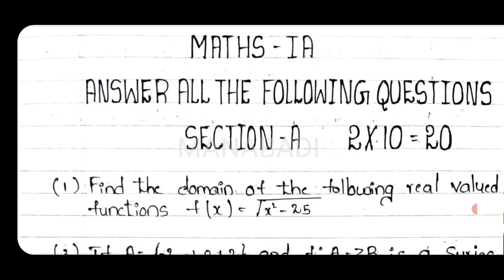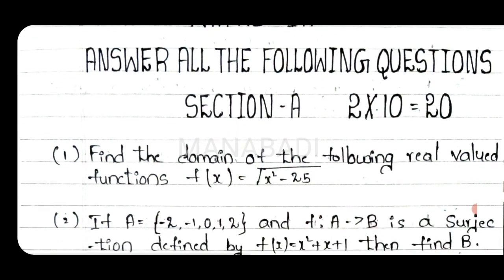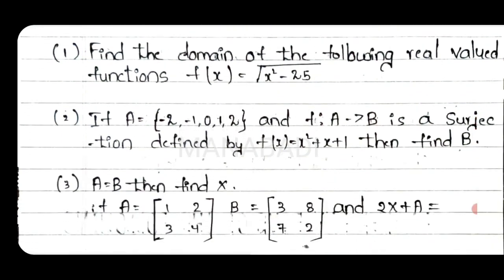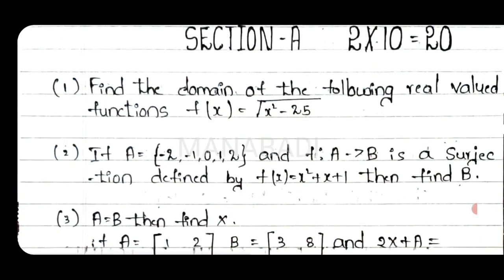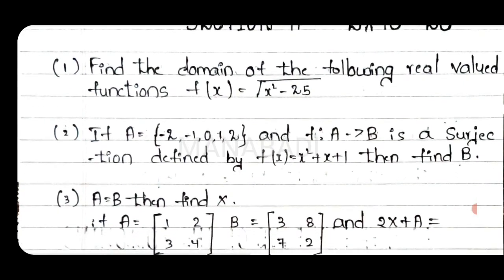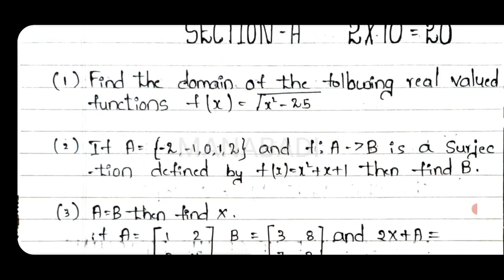First preference is the same, and these are the exact questions. In the first section, we have 10 questions, each question is 2 marks. First question is: find the domain of the following real valued function — f(x) equals root over x squared minus 25.